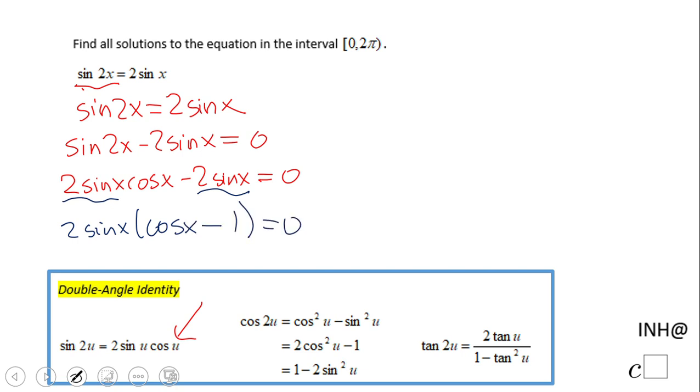And that's equal to 0. So now I'm going to use the zero product property, and we're going to have one equation, 2 sine x equals 0, and we have another second equation, which is cosine of x minus 1 equals 0.